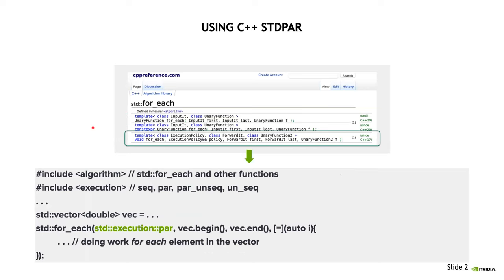If you are a C++ developer, you may have used CPP reference in the past or maybe every day. I pulled this screenshot to show that after this talk, if you want to explore the options that stdpar enables you, look for declarations that have a universal reference to an execution policy as a parameter. You can see I boxed this one out, and you can also see that it is since C++17, because that is the version of the standard it was introduced. NVIDIA does not own this content, so it's not a replacement for actual NVC++ documentation.